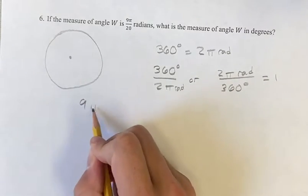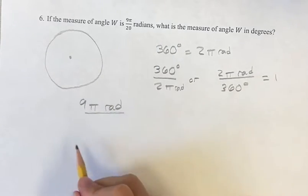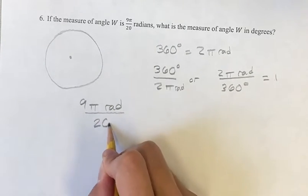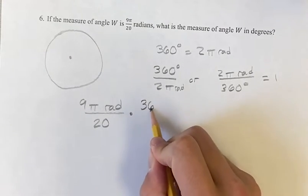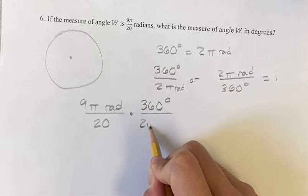So if we have 9π, keep the radians in there, over 20, and we multiply that by 360 degrees over 2π radians,